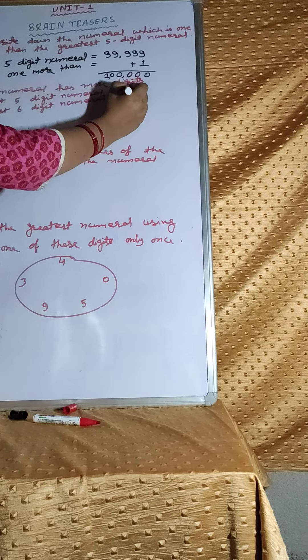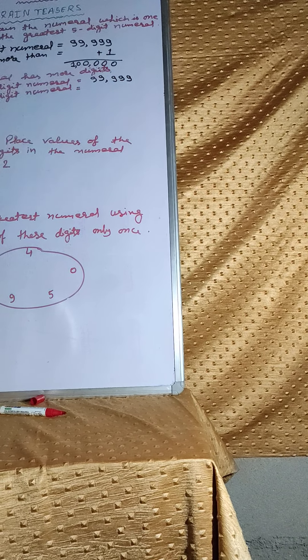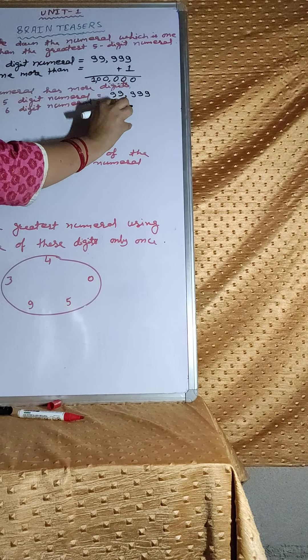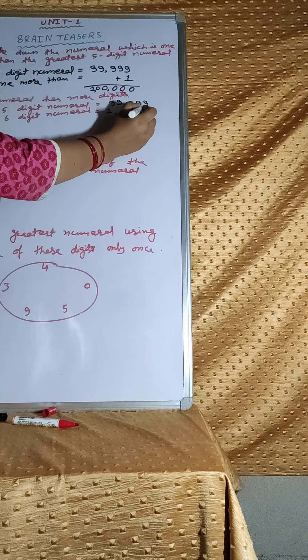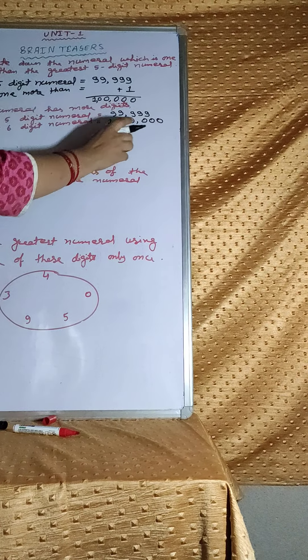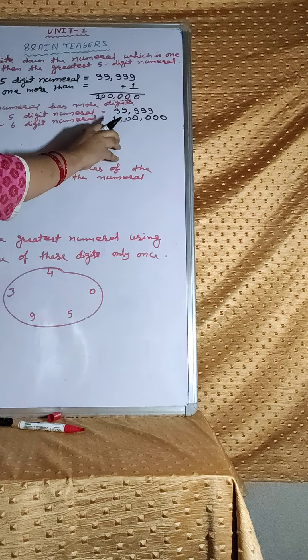Greatest 5 digit numeral and smallest 6 digit numeral. Counting: 1, 2, 3, 4, 5 and 1, 2, 3, 4, 5, 6.